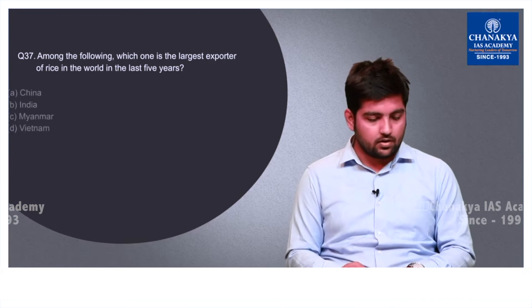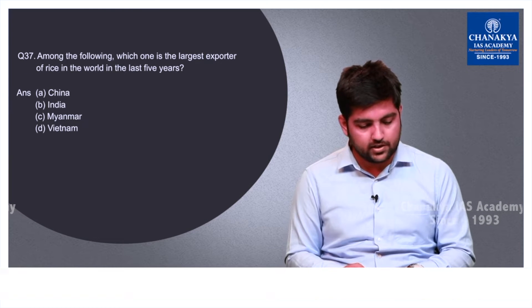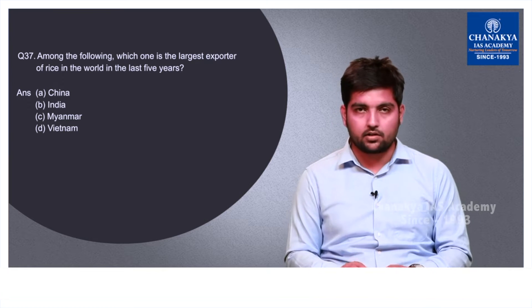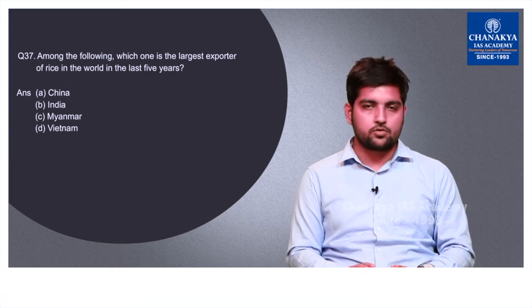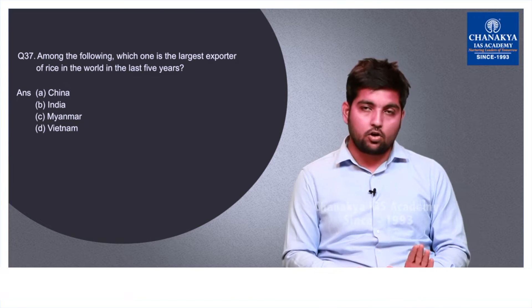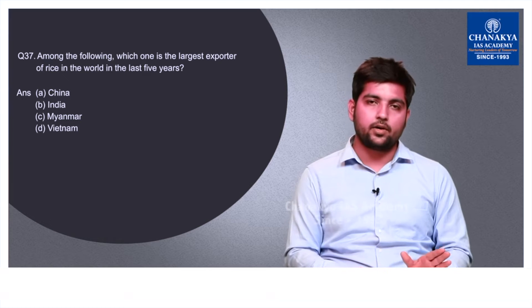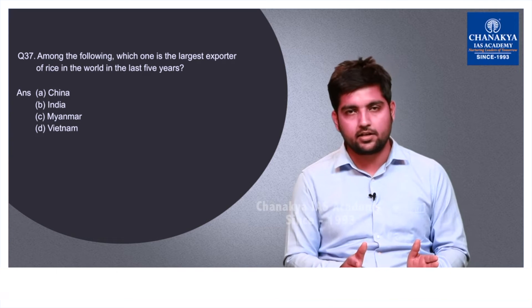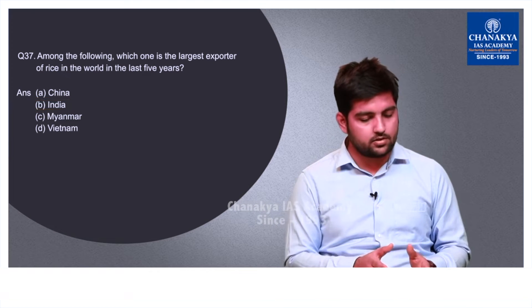Question number 37 asks: among the following, which one is the largest exporter of rice in the world in the last 5 years? The options are China, India, Myanmar and Vietnam. All four countries are very good producers and exporters of rice, but India has occupied the top position since 2015 and has retained that spot. So going by the average, the correct option is B — India.